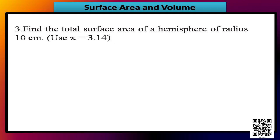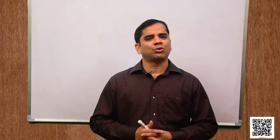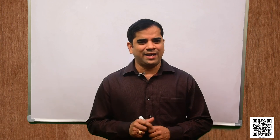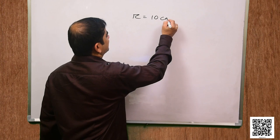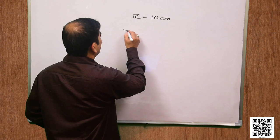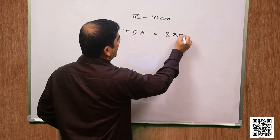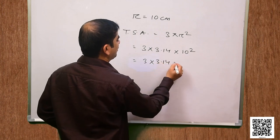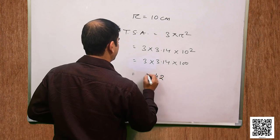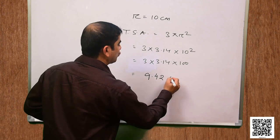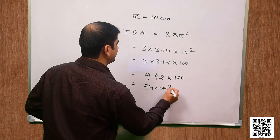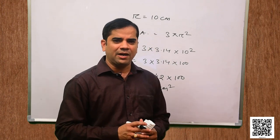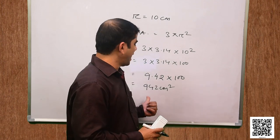Let us now solve question number 3. It says find the total surface area of a hemisphere of radius 10 cm, using pi as 3.14. The radius r is equal to 10 cm. The formula for total surface area is 3 pi r squared, that is 3 into 3.14 into 10 squared, which is 3 into 3.14 into 100. That gives 9.42 into 100, equal to 942 cm squared. So the total surface area of the hemisphere of radius 10 cm is 942 cm squared.